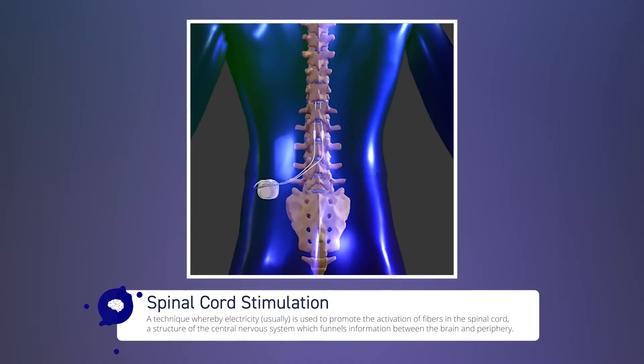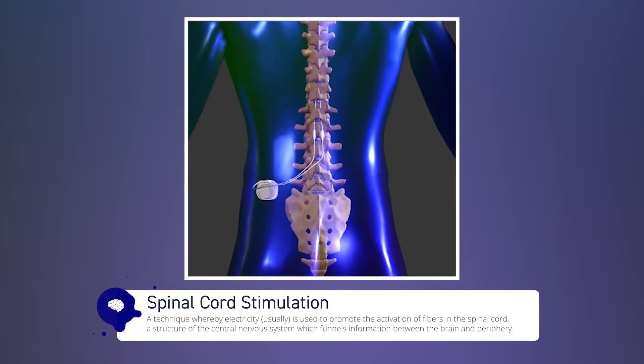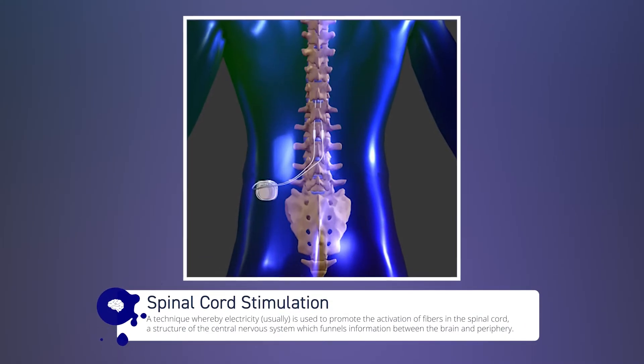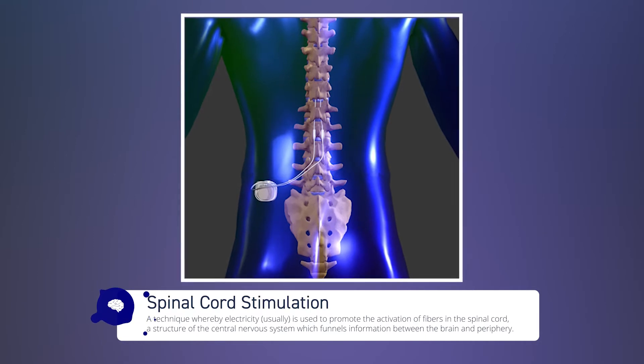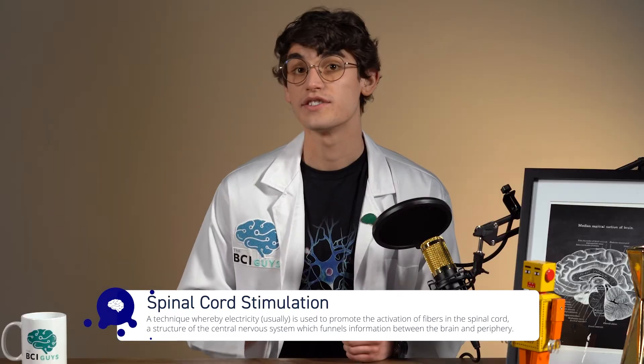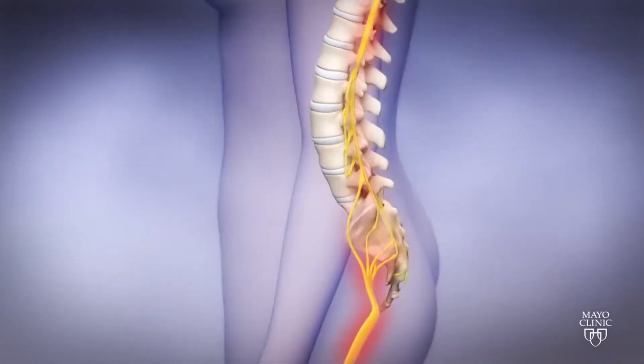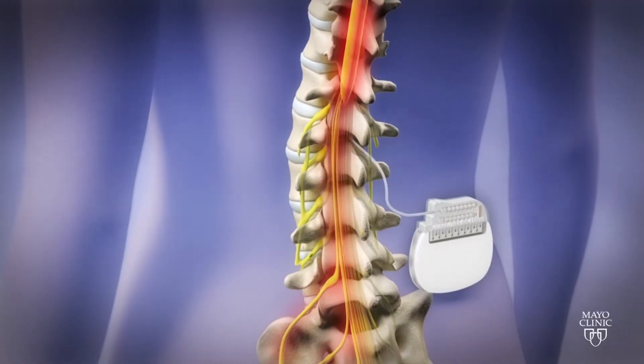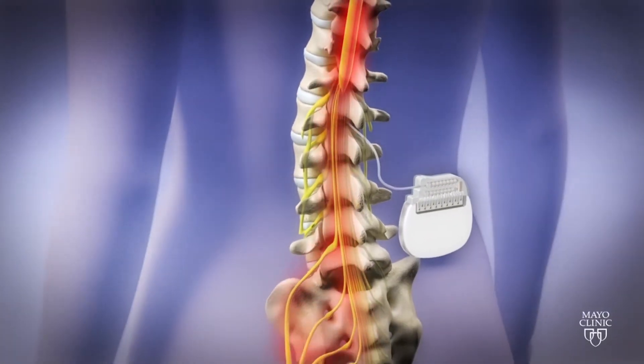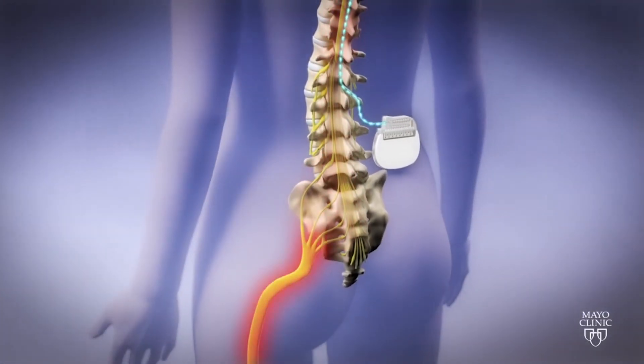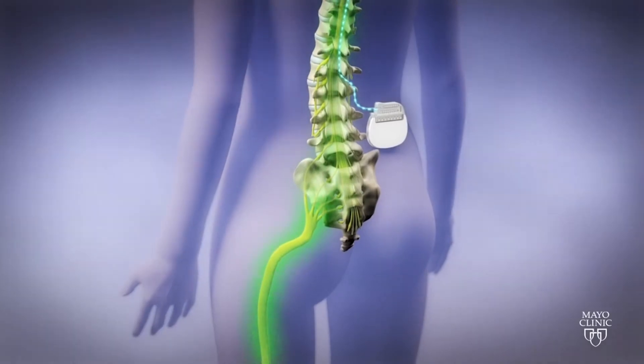In spinal cord stimulation, an electrode stimulator is implanted into the spinal cord. The system is similar to the setup for DBS. It is used to treat many types of chronic pain by inhibiting signals before they are sent to the brain through electrical stimulation of target spinal areas. It is also useful in the treatment of irregular heartbeat, balance, and vascular disease.